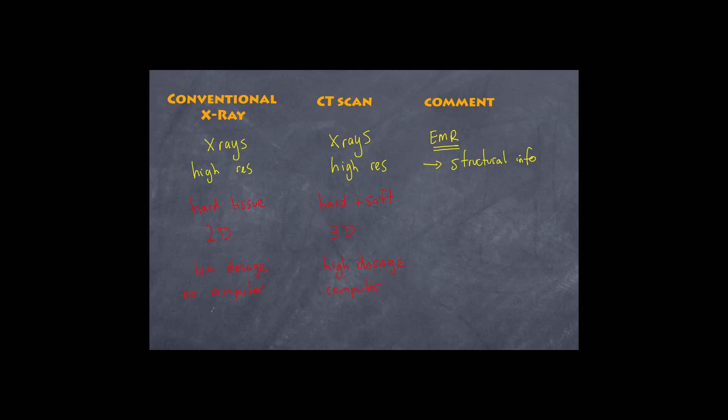And lastly, a conventional X-ray is relatively cheap to produce. Since there's no computer and you just require the film, then basically the X-rays are relatively cheap to get. Whereas a CT scan, because of all the technology required, is significantly more expensive. So again, a doctor may look at an X-ray and because of the fact that it has a low dosage and is cheap, if it does the job, that is all that is required.